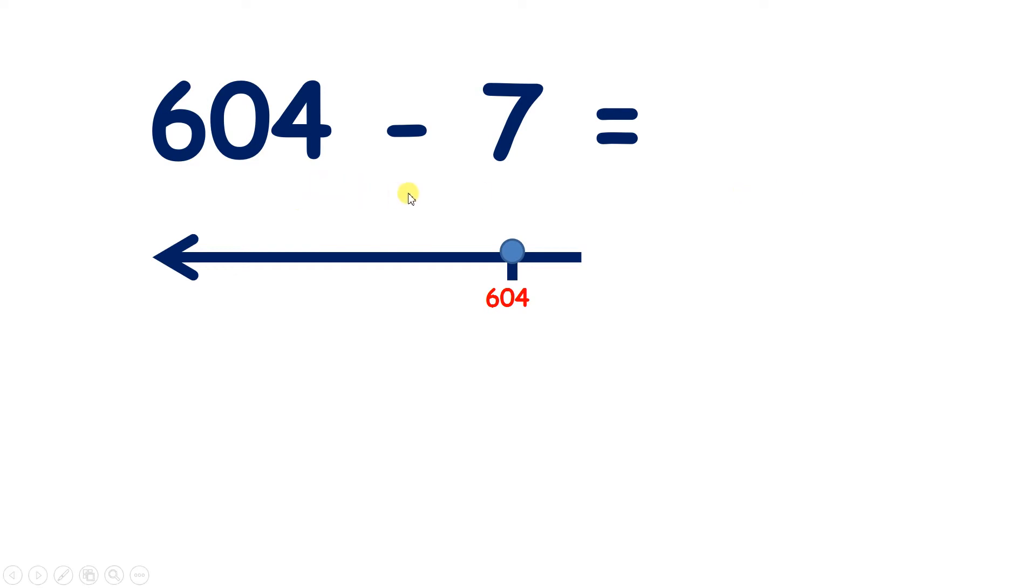And again, we could use bridging to get the answer more quickly. How could we use bridging here? Well, if we're on 604, our previous multiple of 10 is 600. So subtracting 4 takes us to 600. And then, if we subtract another 3, that means we've subtracted 7 altogether. And that gives us our answer of 597.